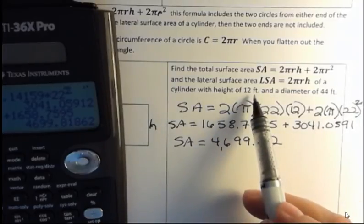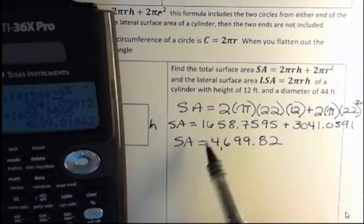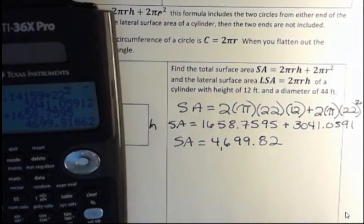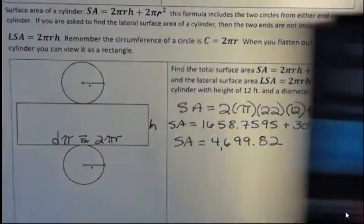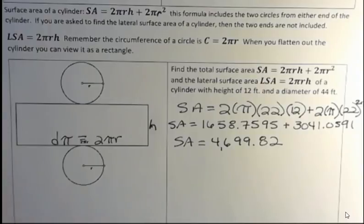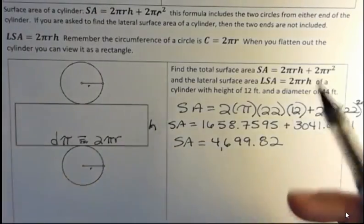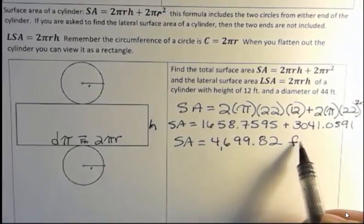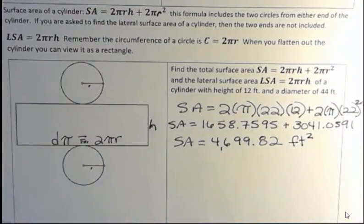Now when we talked about volume, it was to the third power because it's three-dimensional. Look at our picture of what we're doing here. This is a flat object. It's two-dimensional. So it's two-dimensional. It's got a length and a width. There's no height to that once we flatten it out. So every time we're talking about surface area, we're talking about feet squared.